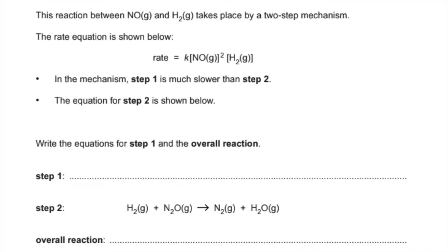Here's the second one. Just as before, step one we're told is much slower than step two so that's the rate determining step. So we're going to need two moles of NO and a mole of H2.